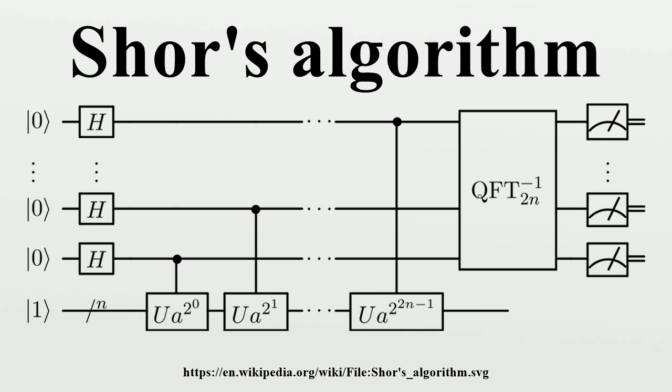This is substantially faster than the most efficient known classical factoring algorithm, the general number field sieve, which works in sub-exponential time, about O(e^(n^(1/3)(log n)^(2/3))).